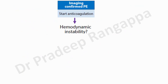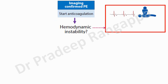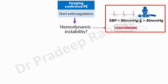Then one has to assess whether the patient is hemodynamically stable or unstable. Hemodynamic instability is defined as bradycardia, cardiac arrest, systolic blood pressure less than 90 mmHg with confirmed PE, or a drop in systolic blood pressure of more than 40 mmHg from baseline.